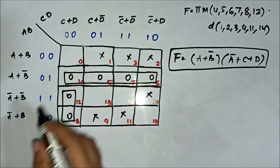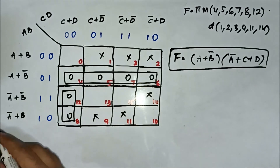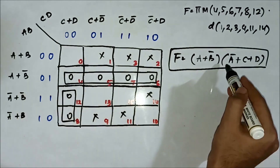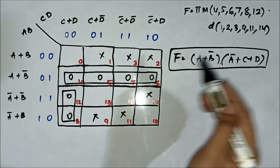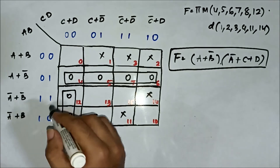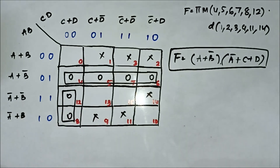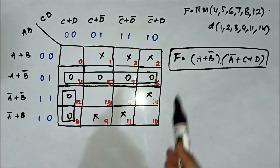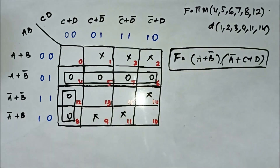So the simplified Boolean expression is (A+B̅)(A̅+C+D). This is the simplified Boolean expression for this set of max term values and don't care values.